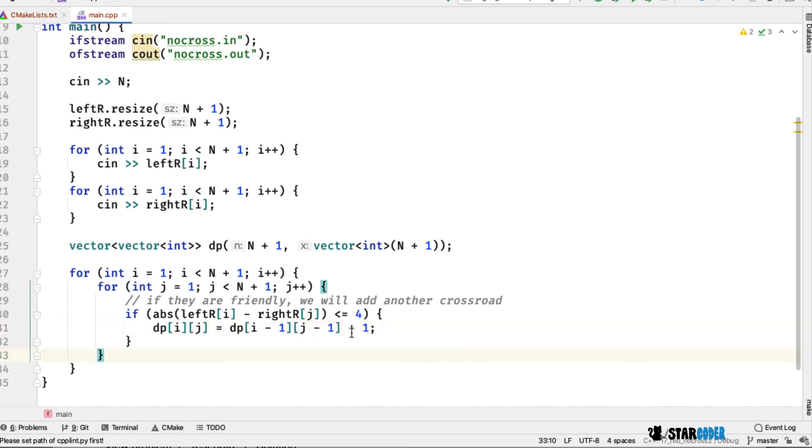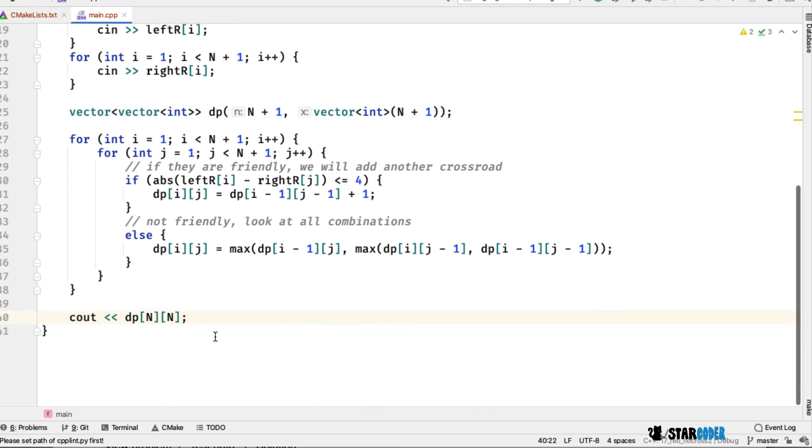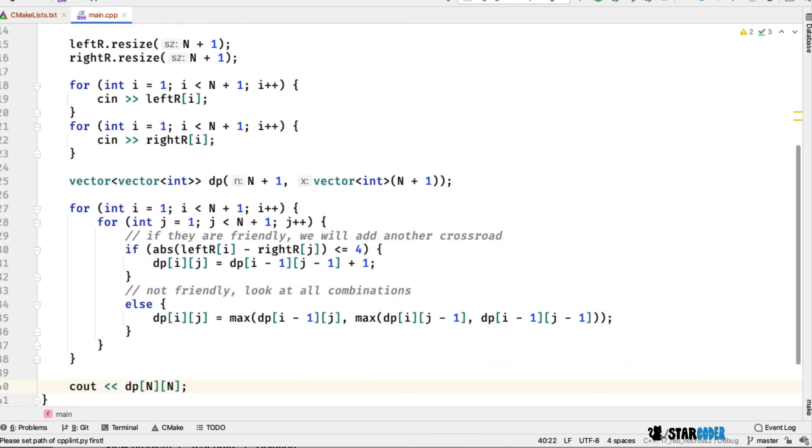If they are not friendly then we're going to look at all of the other combinations. If they cannot be connected we're just going to do the max of them not being connected, basically not including them. At the very end we're going to output dp[n][n] and that's the end of our program.